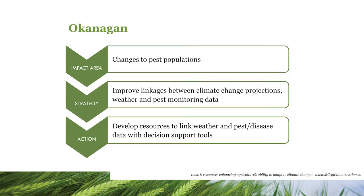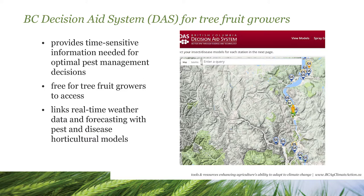The first example is one from the Okanagan, where one of the impact areas in the plan was the changes to pest populations. The strategy that came through the Okanagan plan was an interest in improving the linkages between climate change projections, weather, and pest monitoring data — specifically improving predictive ability around pest emergence. The action was to develop resources to support that connection between weather and pest and disease data, in the form of a decision support tool for producers, which is exactly what we were able to do.